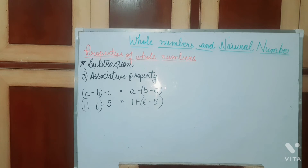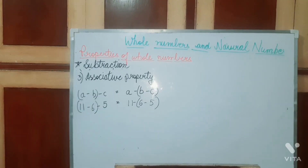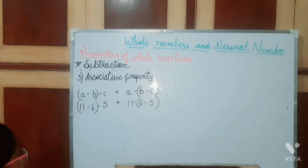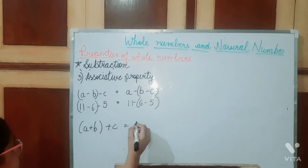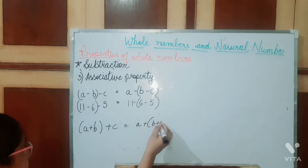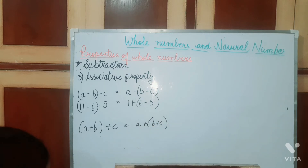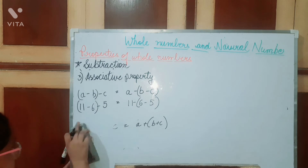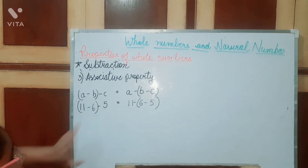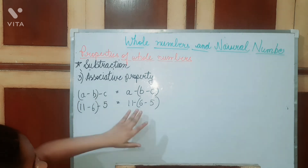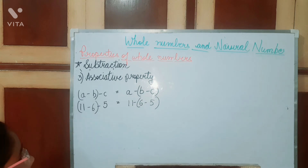The next property is associative property. In addition, we studied that associative property is: (a plus b) plus c is equal to a plus (b plus c). Now for subtraction, we check whether (a minus b) minus c is equal to a minus (b minus c), where c is outside the bracket on one side and b and c are inside the bracket on the other side.